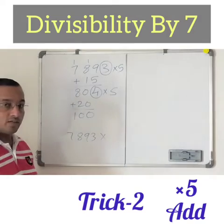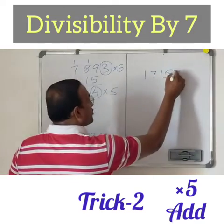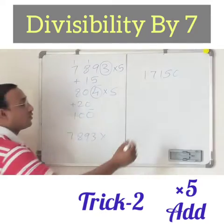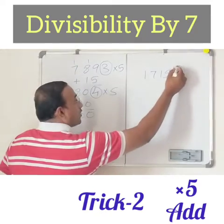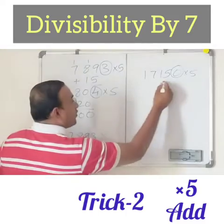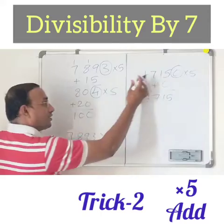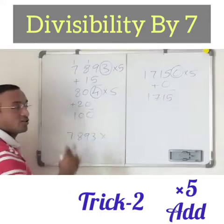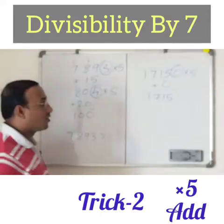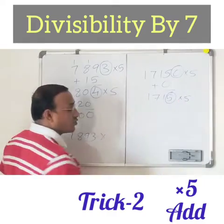Let's go with one more example. Let's take 17150. So what to do? Take the last digit — 0 — multiply by 5. How much? 0. Since adding 0 doesn't change the number, you can take the remaining 4 digits only, excluding the 0. Or you can go with the process. So take the last digit 5, multiply by 5. How much? 25.